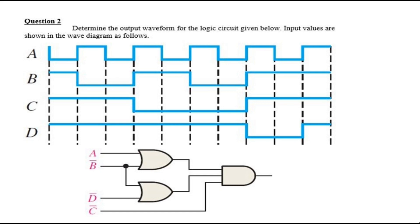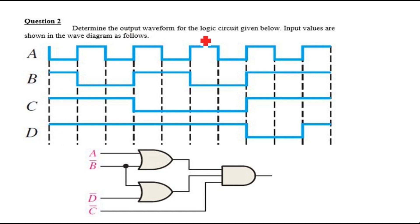In this video I will tell you how to solve multiple logic gate waveform problems when you are having multiple logic gates in a single circuit and input waveforms are given to you. The question says: determine the output waveform for the logic circuit given below; input values are shown in the diagram, with waveforms a, b, c, and d provided.